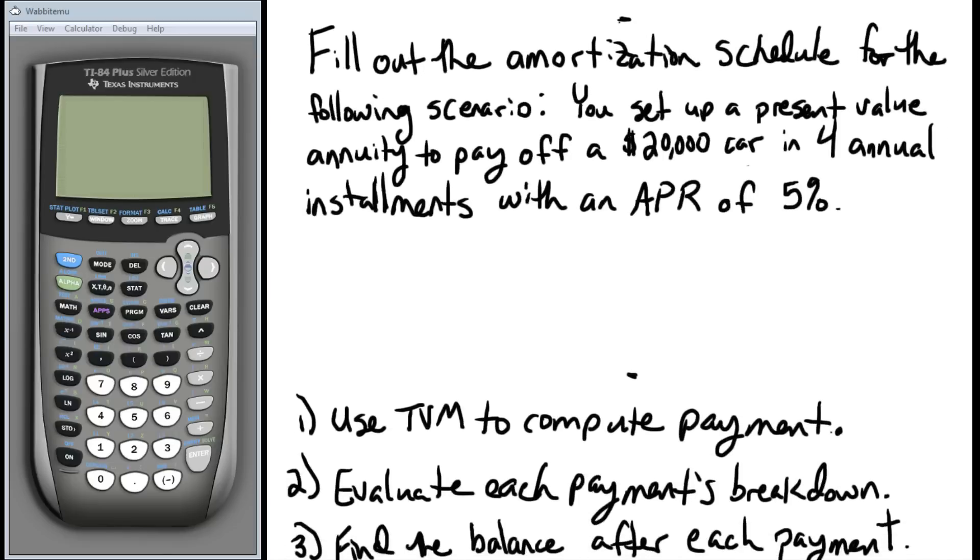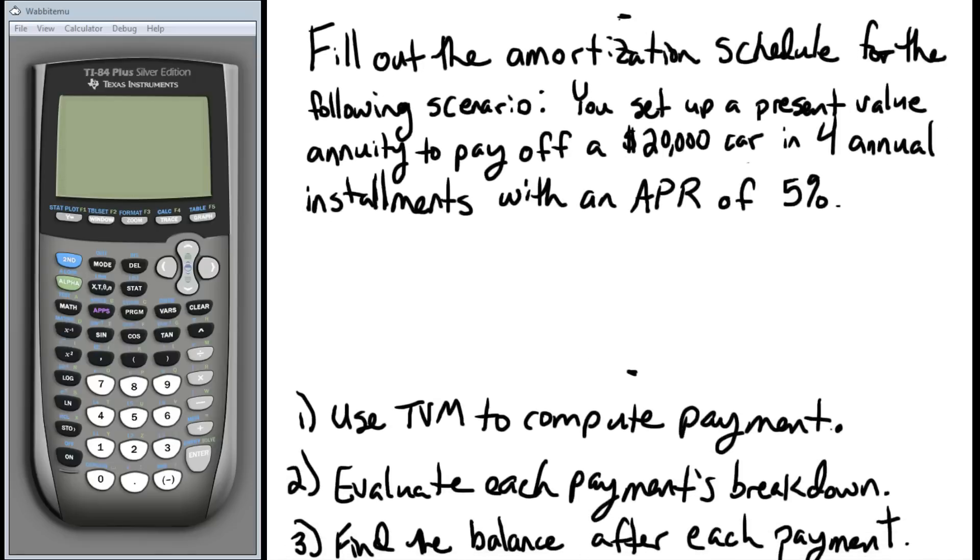We're going to fill out the amortization schedule for the following scenario. You set up a present value annuity to pay off a $20,000 car in four annual installments with an APR of 5%. So our big piece of information is the price of the car, the four annual installments. We're talking about annual payments or annual interest with an APR, that's an annual percentage rate of 5%.